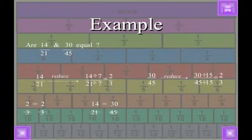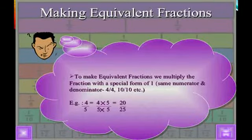To make equivalent fractions, we multiply the fraction with a special form of 1, same numerator and denominator.